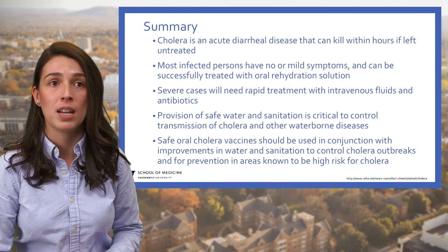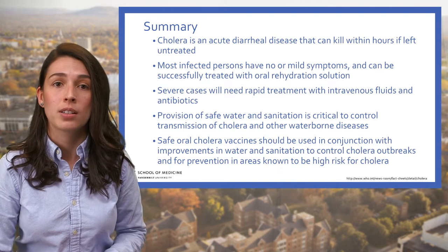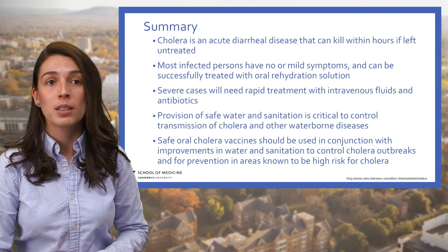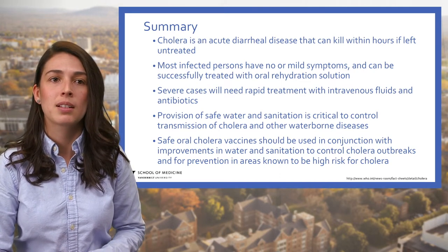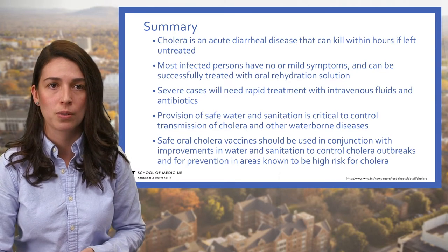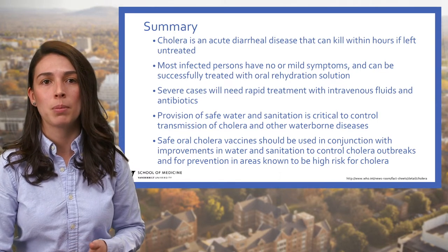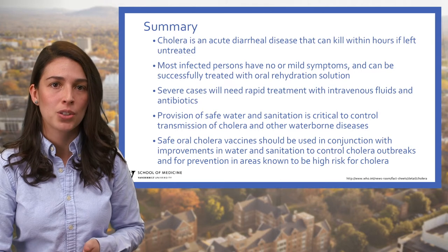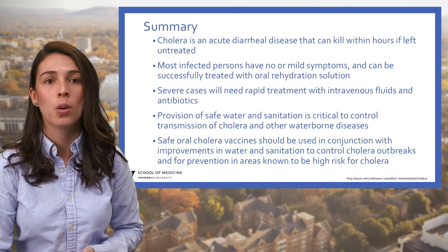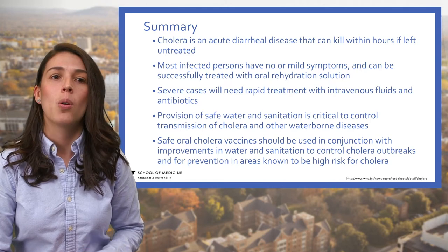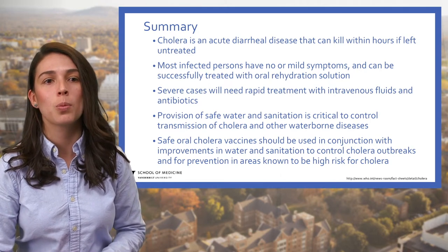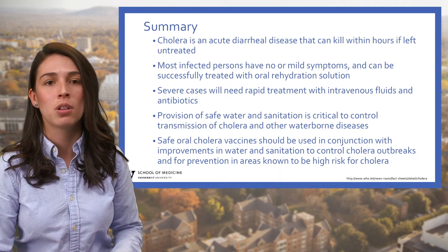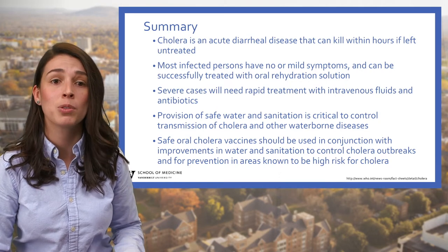In summary, cholera is an acute diarrheal disease that can kill within hours if left untreated. Most infected persons have no or mild symptoms and can be successfully treated with oral rehydration solution. Severe cases need rapid treatment with intravenous fluids and antibiotics. Provision of safe water and sanitation is critical to control transmission, and oral cholera vaccines should be used in conjunction with improvements in water and sanitation to control outbreaks and prevent disease in high-risk areas.